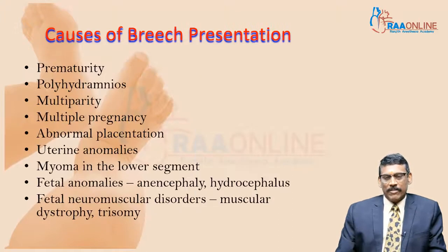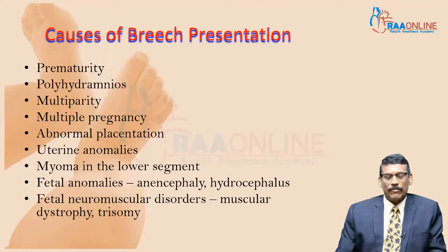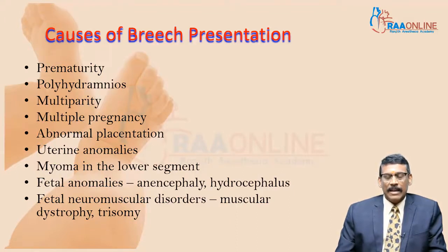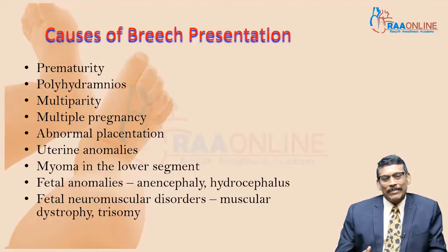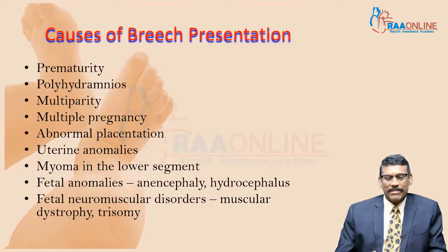Coming to the causes of breech presentation, the topmost cause would be prematurity. When we have a baby at 33 or 34 weeks, it could be in breech presentation. At extreme prematurity, for example 28 weeks, the baby can lie in any position. Breech in a preterm is not unusual, and that is why prematurity tops the list of causes of breech presentation.